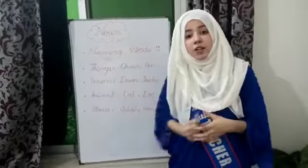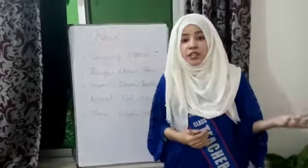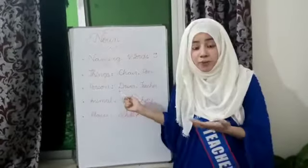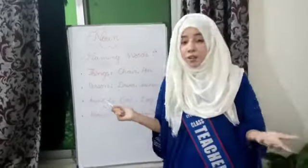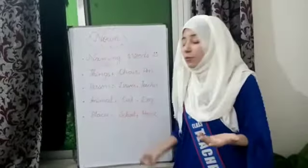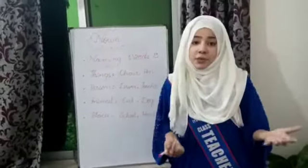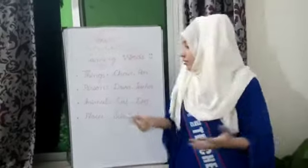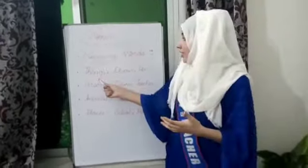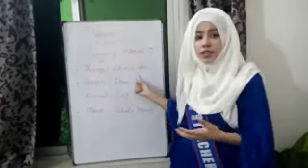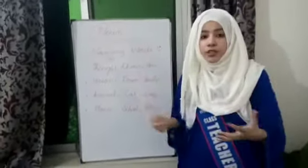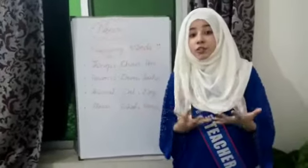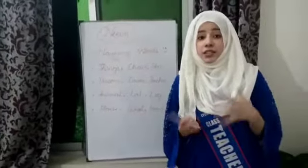Naming words are called a noun. It can be the name of a person, the name of a place, the name of a thing, or the name of an animal — these all are nouns. For things: chair, pen, board, table — these are all things, and since they all have names, they are all nouns.